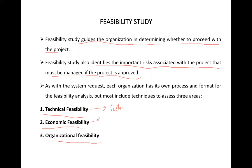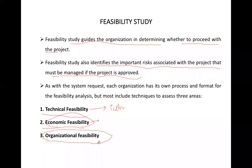Economic feasibility is related to finances — how much will it cost and what will the return be. Organizational feasibility considers whether people will accept the project. If we are doing this project, will the user accept it? What will their reaction be? If not, what will their reasons be? We will discuss all these things in the feasibility study.